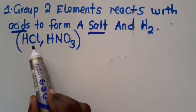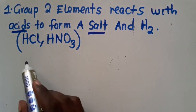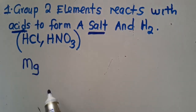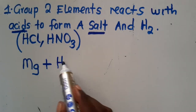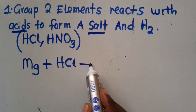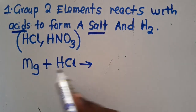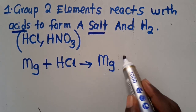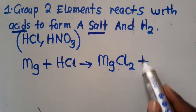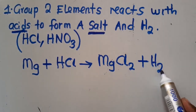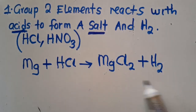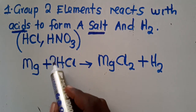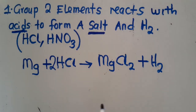When you get any group 2 element — for instance, let us take magnesium — you react magnesium with hydrochloric acid. What are you going to form? Magnesium chloride plus hydrogen gas. This is called a chemical equation. Now, is this balanced? No. You put a 2 there and it is balanced. Hydrogen 2, hydrogen 2. Chlorine 2, chlorine 2 — balanced.